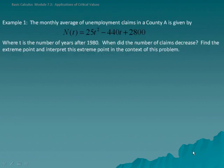Example 1: the monthly average of unemployment claims in County A is given by this function, where T is the number of years after 1980. When did the number of claims decrease? Find the extreme point and interpret the extreme point in the context of this problem.